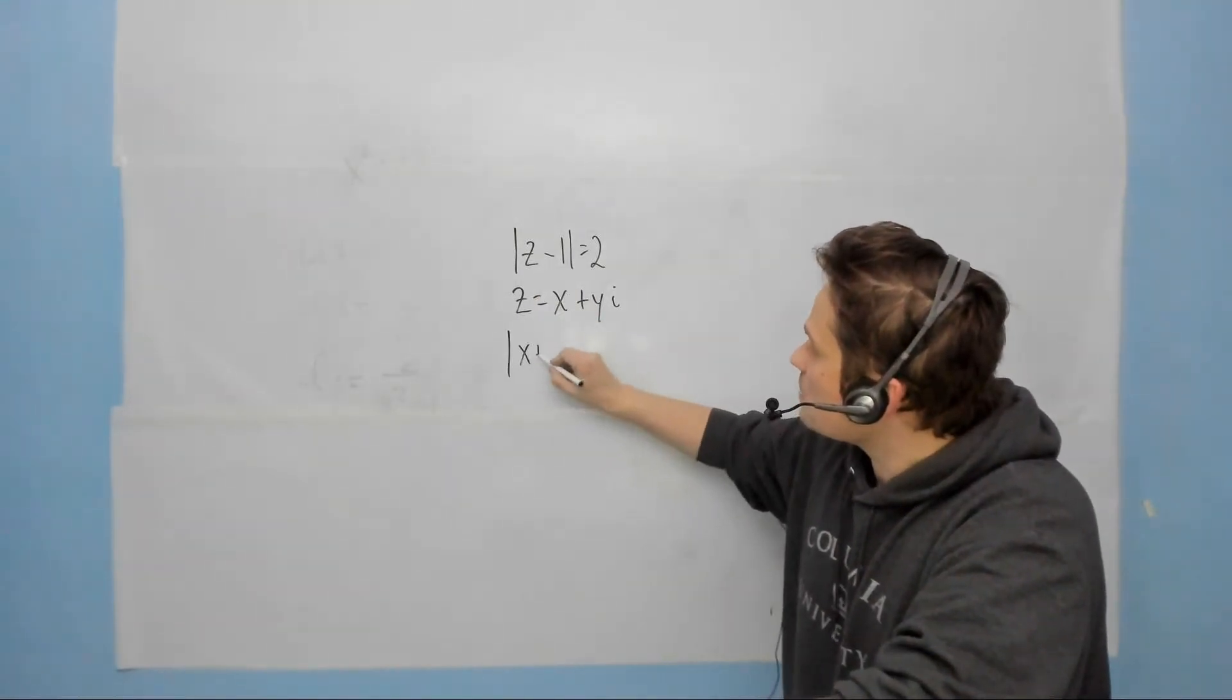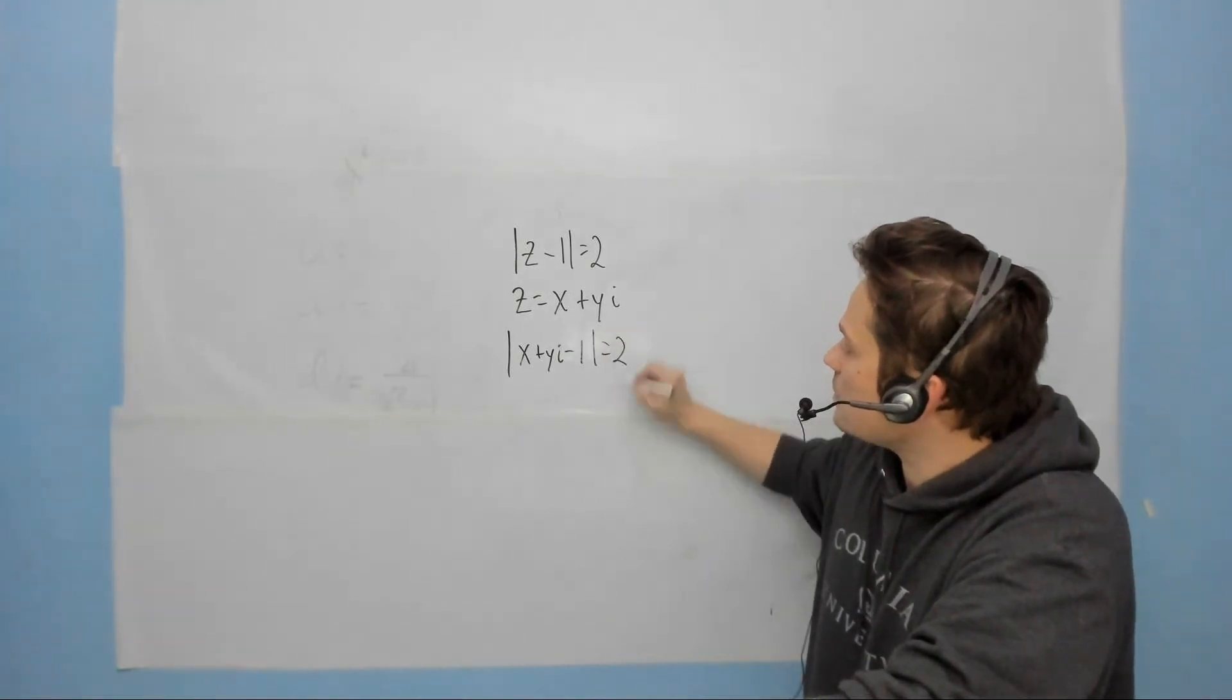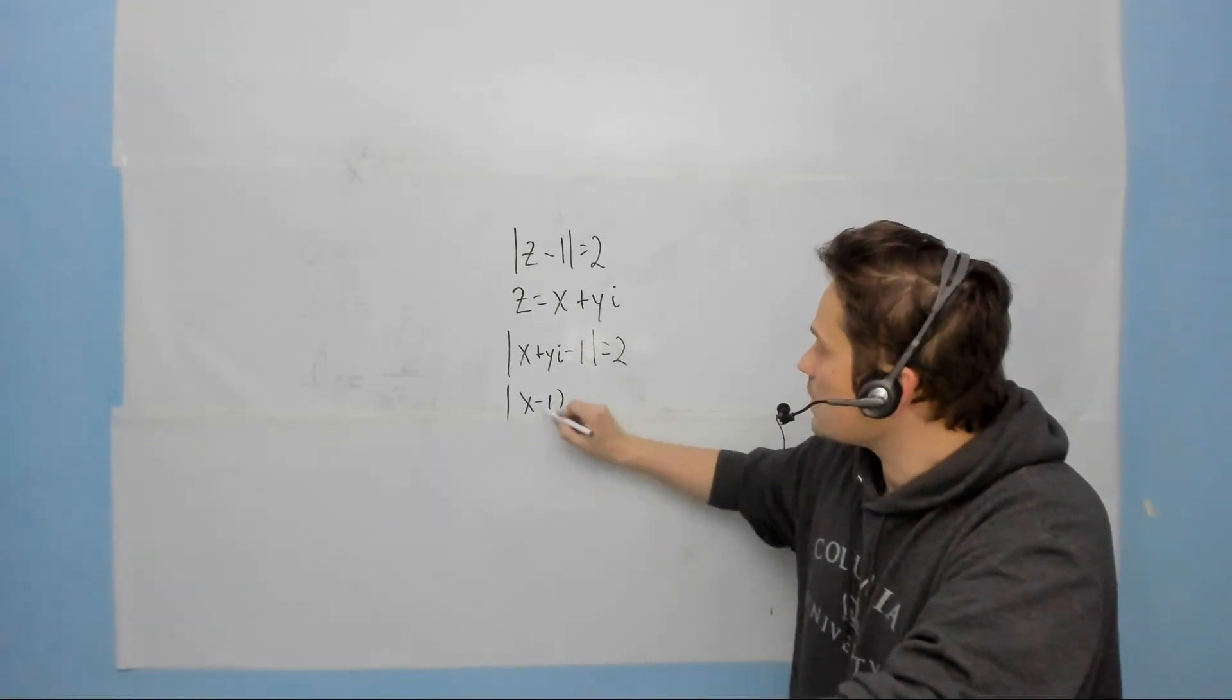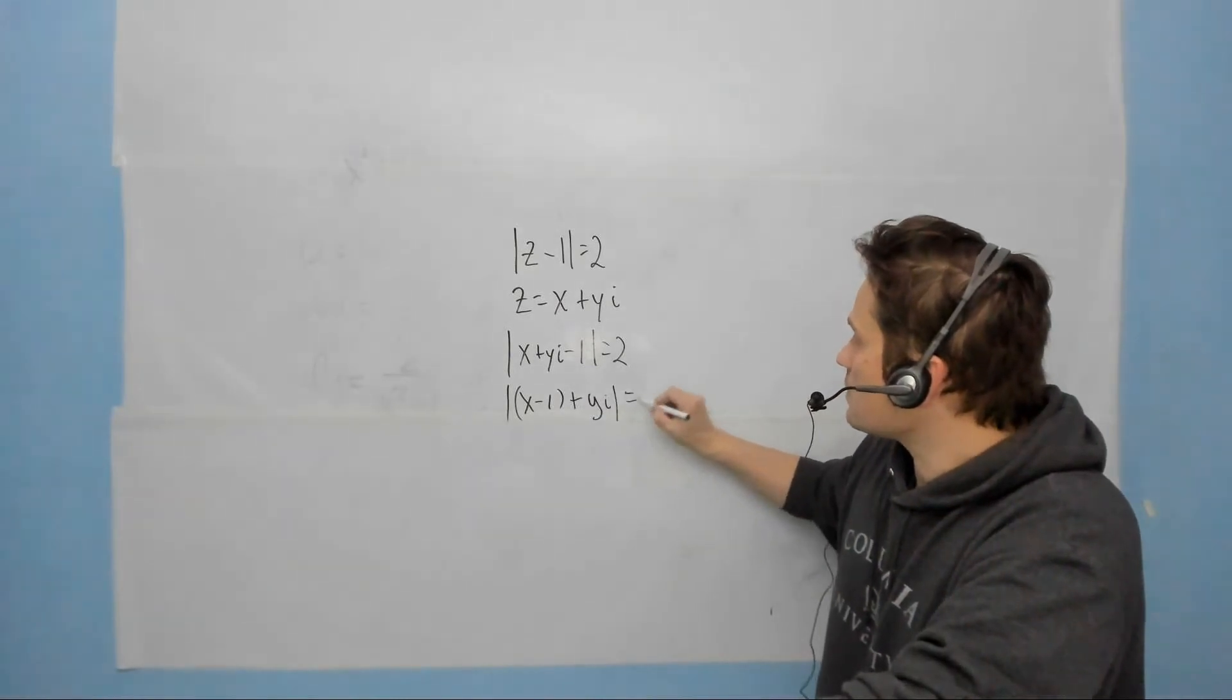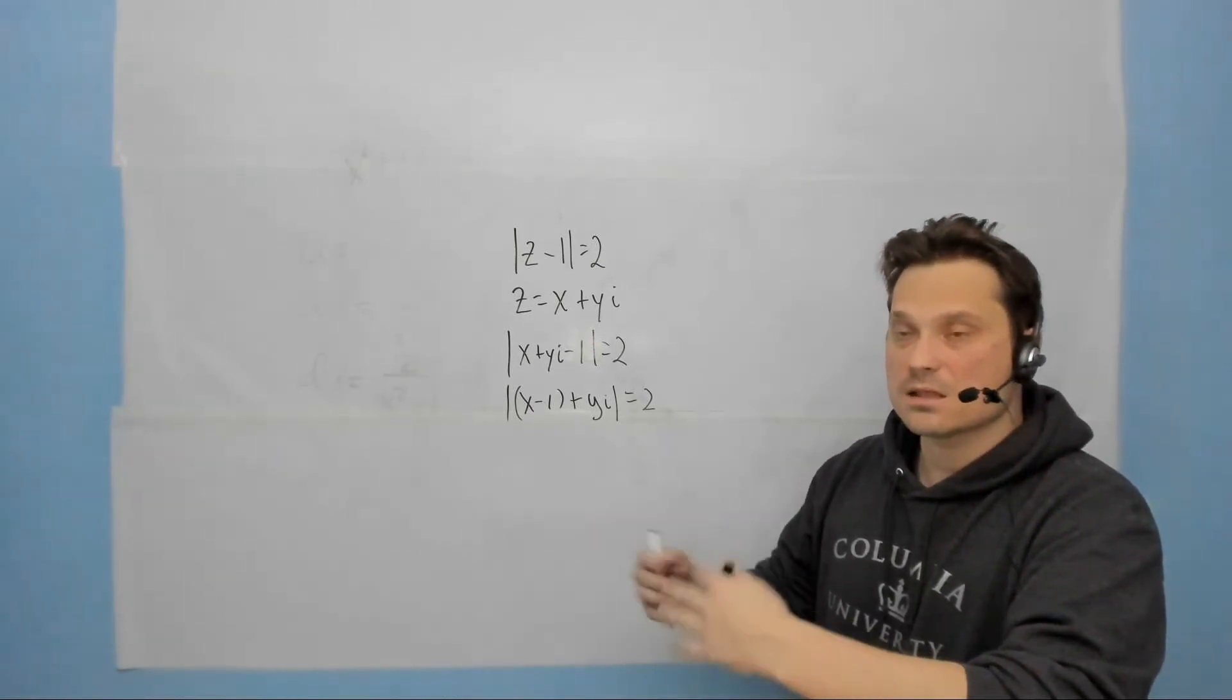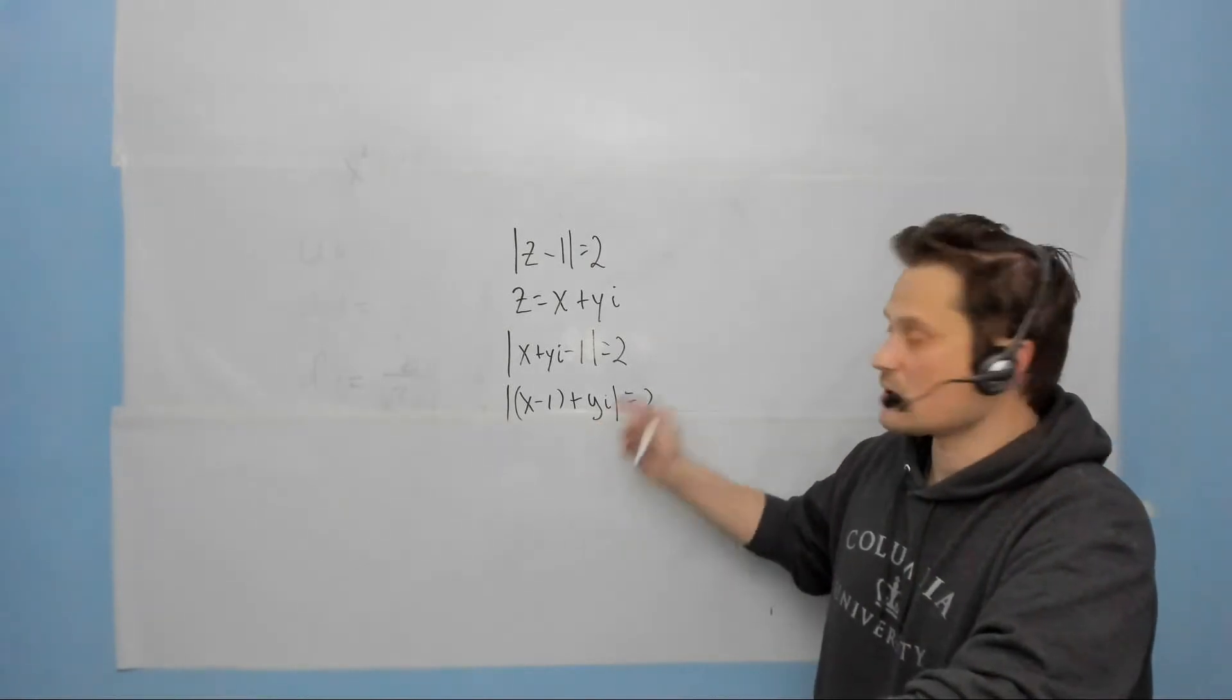I'll replace z with x plus yi, and then let's see minus 1, and the whole thing is equal to 2. Then group the x and the negative 1 together. That's going to give me now x minus 1 in parentheses, plus yi, the whole thing is equal to 2. I'm just grouping these together inside parentheses, so things are easier to stick into the basic distance formula, when you find the length of the magnitude, or the modulus of this complex number.